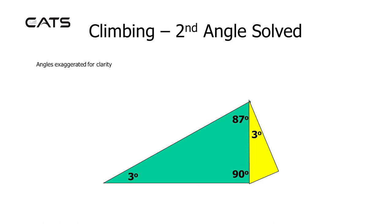Looking at the yellow triangle, the 87 degrees must have 3 degrees added to it to make a corner of the rectangle of 90 degrees. This means the climb angle is equal to the angle sitting at the top of the yellow triangle.